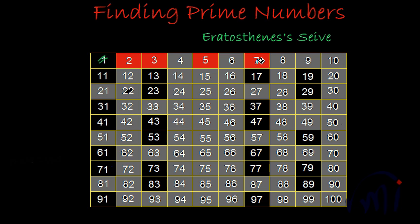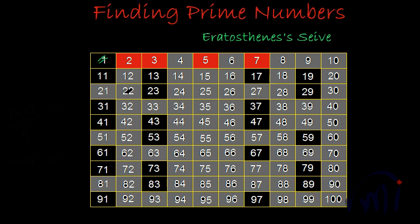We need not check seven times eight because eight is even and all even numbers are already struck off. Seven times nine we skip because nine is a multiple of three, already struck off. Seven times ten is also not required. Seven times eleven is seventy-seven — this is not a prime number as it is a multiple of seven, so it gets shaded. Seven times thirteen is ninety-one — also not prime, so shaded. Seven times fifteen is 105, which exceeds 100, so we stop.